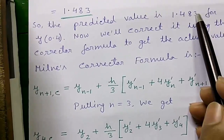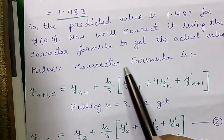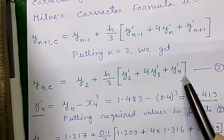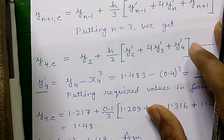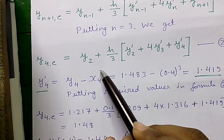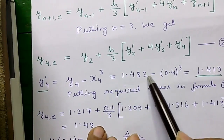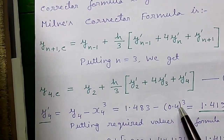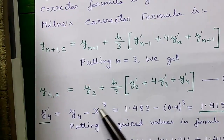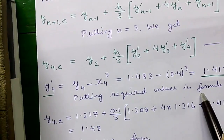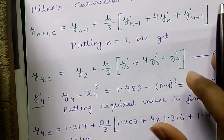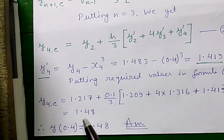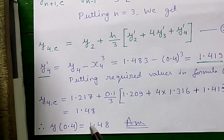Now we will correct it using the Milne corrector formula to get the actual value. Again putting n = 3, we get the simplified corrector formula. We need y'₄, calculated as y'₄ = y₄ - x₄³, where y₄ is the predicted value 1.483 and x₄ = 0.4. This gives y'₄ = 1.419. Putting all required values into the corrector formula gives y₄c = 1.48. So y(0.4) = 1.48.